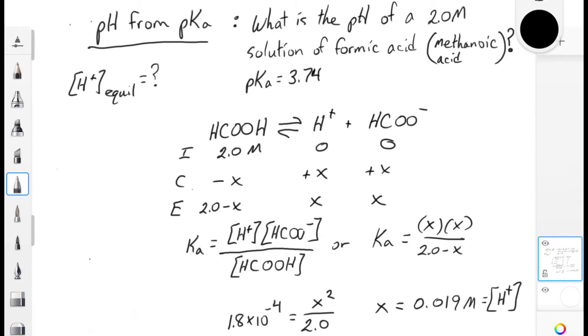So from this, we can calculate our pH, and we can determine that our pH is now 1.72.